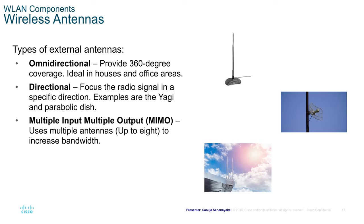MIMO antennas, or multiple input multiple output, use multiple antennas — up to eight — to increase bandwidth. You can have multiple antennas in one single unit, and MIMO technology can increase the bandwidth of the signal going across the system.